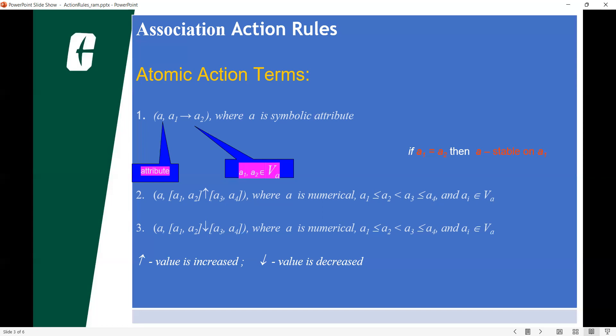We can take an example of association rule between the relationship between milk and bread. For example, if a person goes to a supermarket and if he buys milk, he will buy bread also.